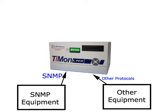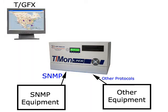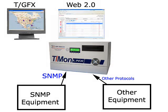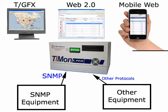As you can see in this first application drawing, TMON can act as your top-level master station. It can bring in alarms from many different protocols, including SNMP, and display them in a single integrated system. Three popular ways to view alarms in TMON are TGFX geographic map software, the Web 2.0 interface accessible from any web browser on your network, and the mobile web interface you can view on your smartphone.